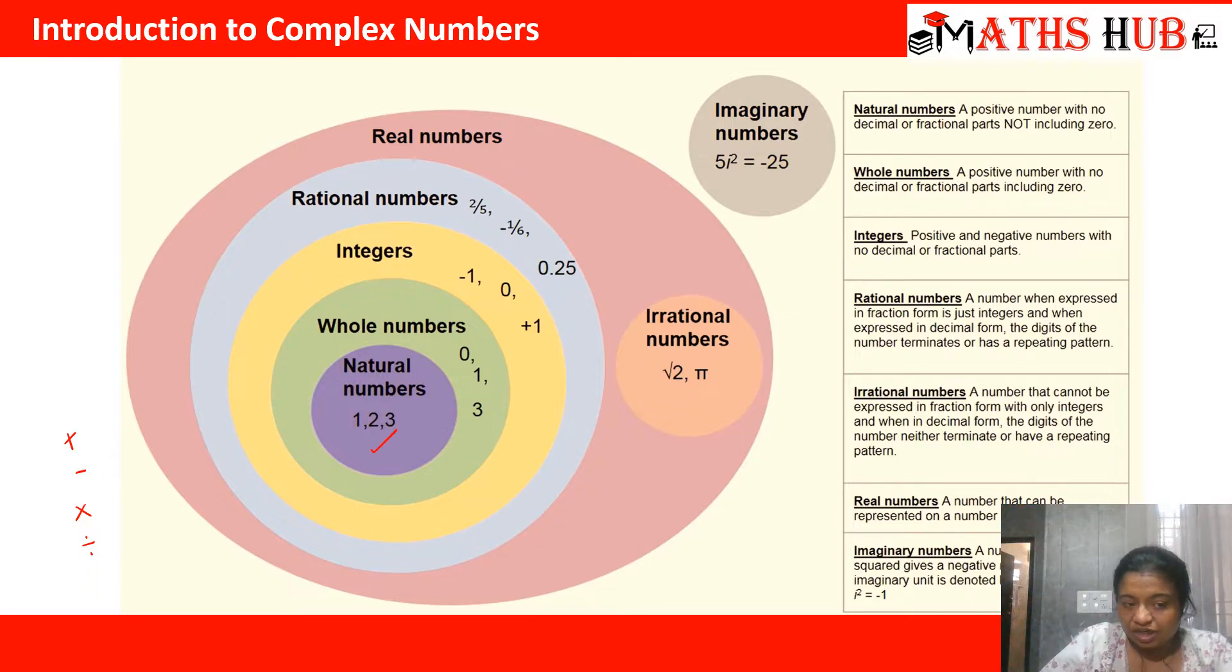Again, when operations started with whole numbers, it was easy to add and subtract. But then the problem was that when we subtracted a smaller number from a bigger number, we were getting negative numbers. And negative numbers were not there in whole numbers. And then the introduction of integers came into being—that is, negative numbers, zero, and all the positive numbers.